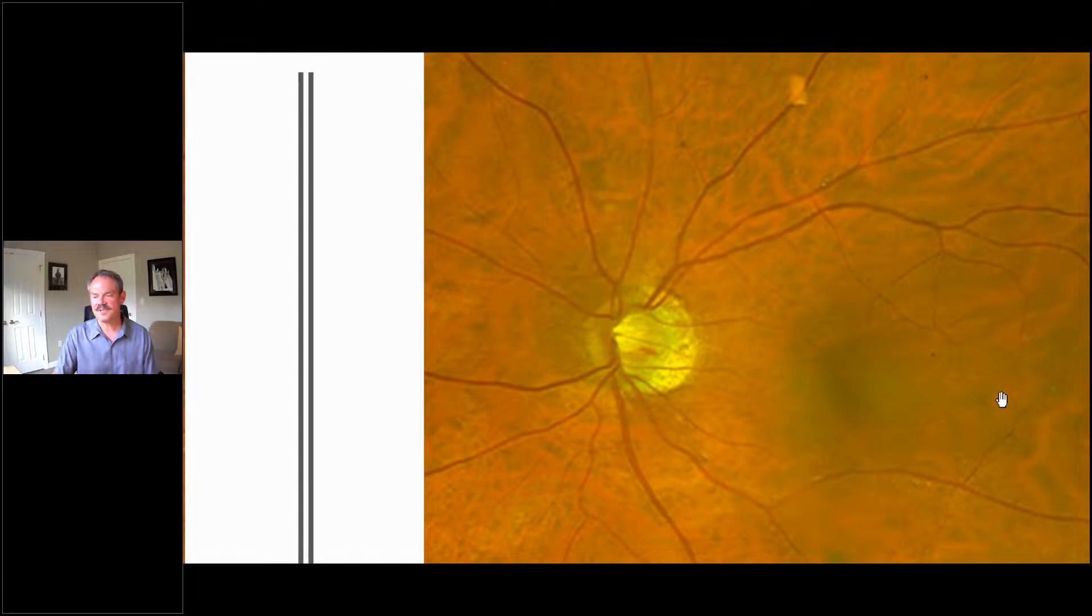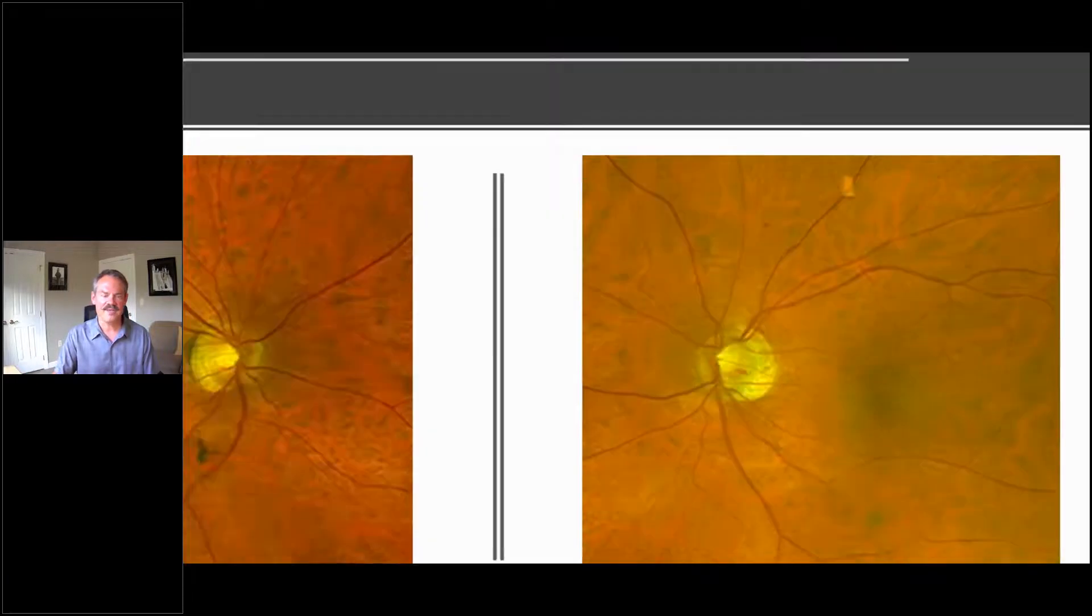That really puts it all together to say our patient, the ganglion cells and the neuroretinal rim, are being stressed out. We need to be more aggressive.